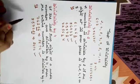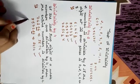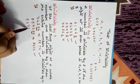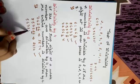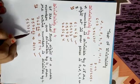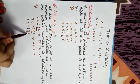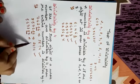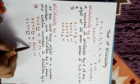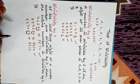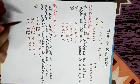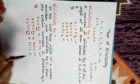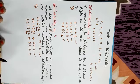One more example: 5,67,787. The last two digits are 87. Is 87 divisible by 4? No, it is not divisible by 4. So the complete number is also not divisible by 4. Clear?